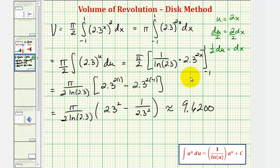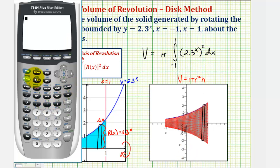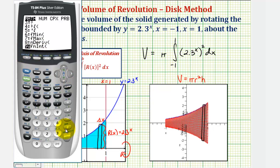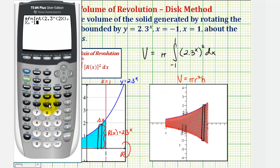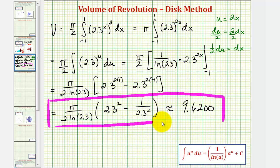This was a fairly involved integral, so just to make sure we didn't make a mistake, let's go back to the first slide and evaluate this integral using the graphing calculator. We have pi times our definite integral, so we'll press math and look for function integration, which is option 9 — enter. Next we enter the integrand, which is 2.3 raised to the power of 2x, comma, the variable of integration x, comma, lower limit negative 1, comma, upper limit positive 1, close parenthesis, and enter. Notice how this does verify our results. We have our exact volume and the approximate volume. I hope you found this helpful.